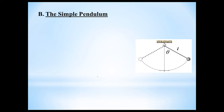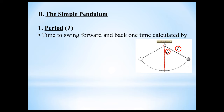In this lesson we're going to focus on the simple pendulum; in the next one we'll talk more about the mass-spring system. The variable L represents the length of the pendulum, and angle theta is the release angle relative to the vertical. The period is the time it takes for the pendulum to swing forward and back one time — to swing all the way to one side and come all the way back to where it started.